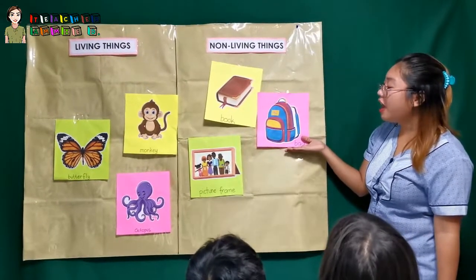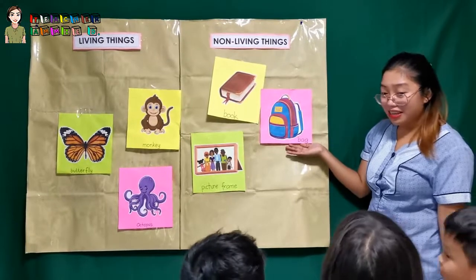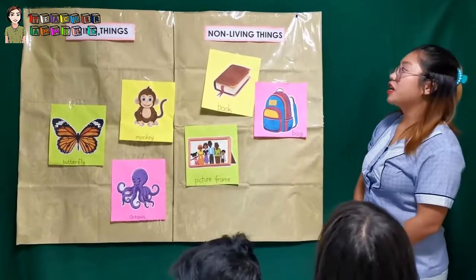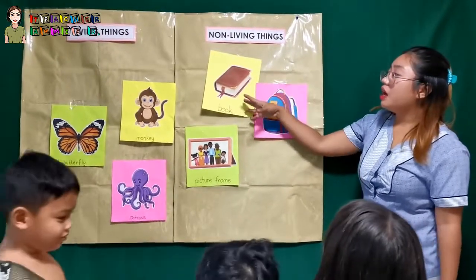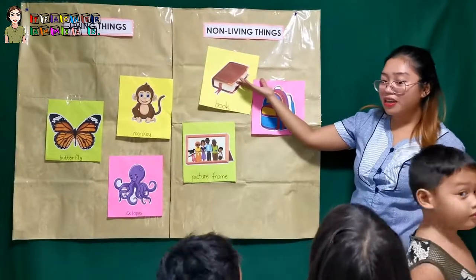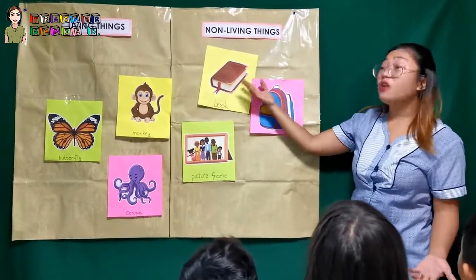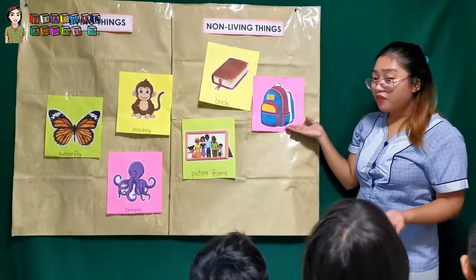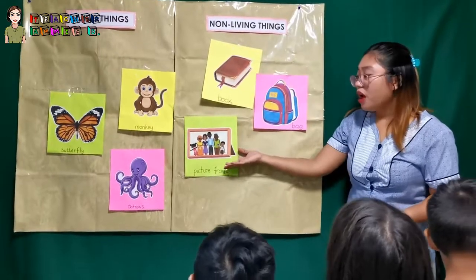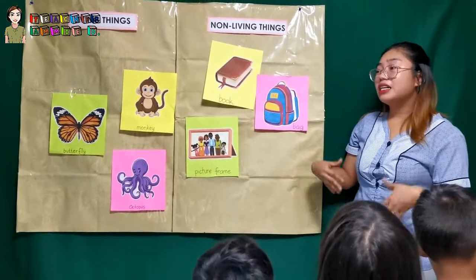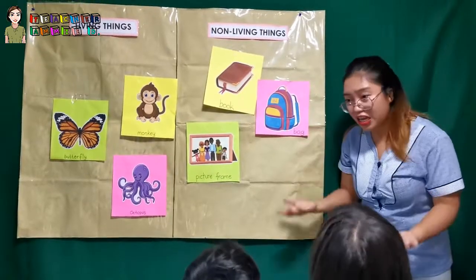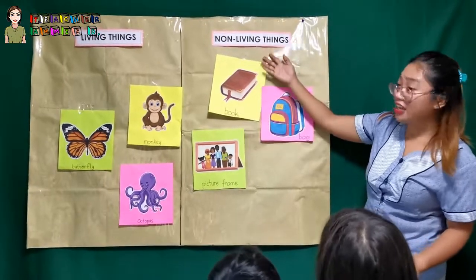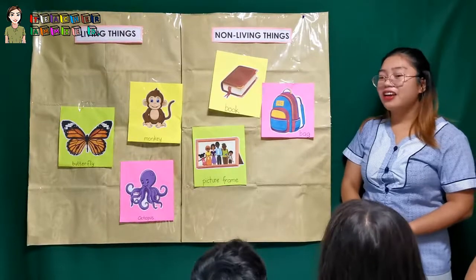So the next picture is a bag. A bag. How about this one? A picture frame. So a book doesn't have any organs. Yes, very good. A book has no life. And also a bag — doesn't have any life. And also a picture frame — doesn't move on its own, doesn't need food and water. So all of these — book, bag, and picture frame — are non-living things. Right? Yes.